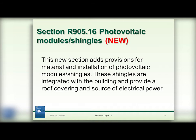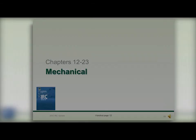Another new section of the code has been added regarding photovoltaic modules and shingles. This adds provisions for the material and installation of photovoltaic modules and shingles. These shingles are integrated with the building and provide a roof covering and a source of electric power. Photovoltaic systems convert sunlight to electrical energy and provide considerable savings on electrical energy from commercial sources. The code requirements now address flame spread on a roof and flame resistance, requiring these materials to be resistant to flame.